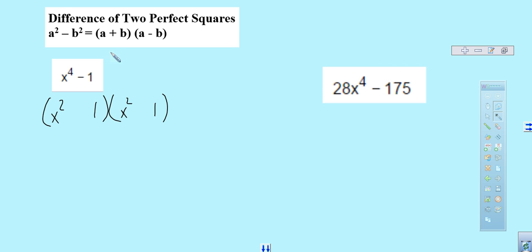And then according to the properties of difference of squares, we know that this would be plus and this one would be minus. So, that's great. Like, that's fantastic. This one is done. You can't do anything else to this factor.